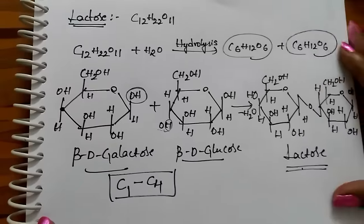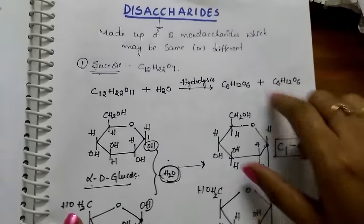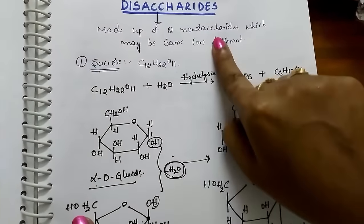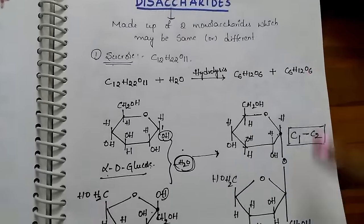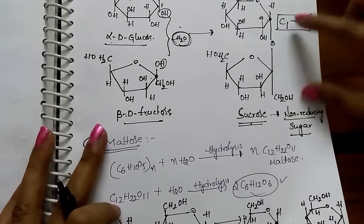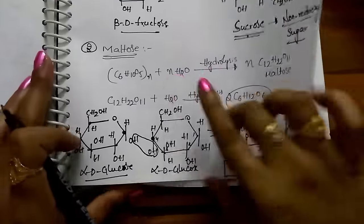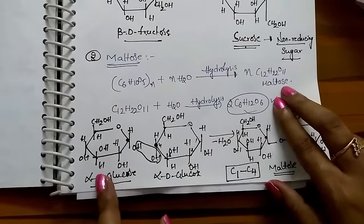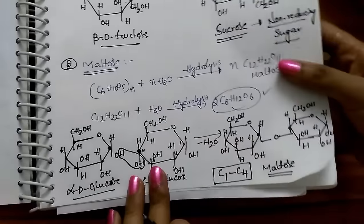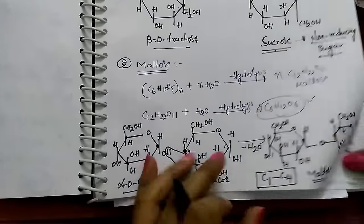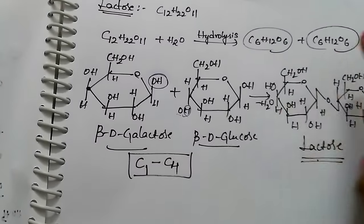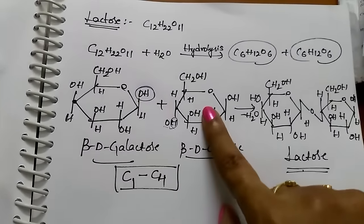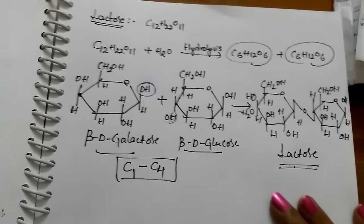In today's session we discussed disaccharides, which contain two monomer units. Sucrose contains alpha-D glucose and beta-D fructose, joined through a C1–C2 glycosidic linkage. Maltose contains two glucose units, both alpha-D, connected through a C1–C4 glycosidic linkage. Lactose contains beta-D galactose and beta-D glucose, both connected through a C1–C4 glycosidic linkage. Thanks for watching this video.